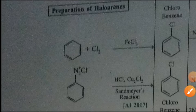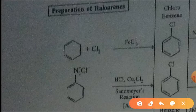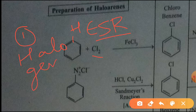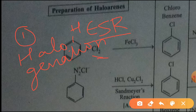We shall discuss the different methods to prepare haloarenes, that is attaching a halogen to the aromatic ring. The first method is by replacing the H of benzene by a chlorine atom. It is called an electrophilic substitution reaction, specifically a halogenation reaction. In halogenation, the hydrogen of benzene is replaced by chlorine and you get chlorobenzene.